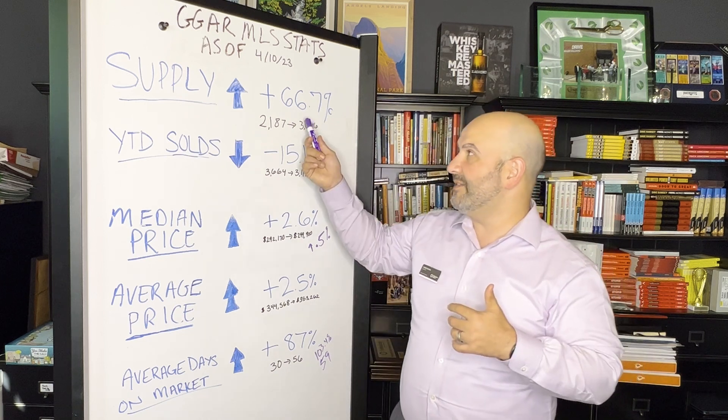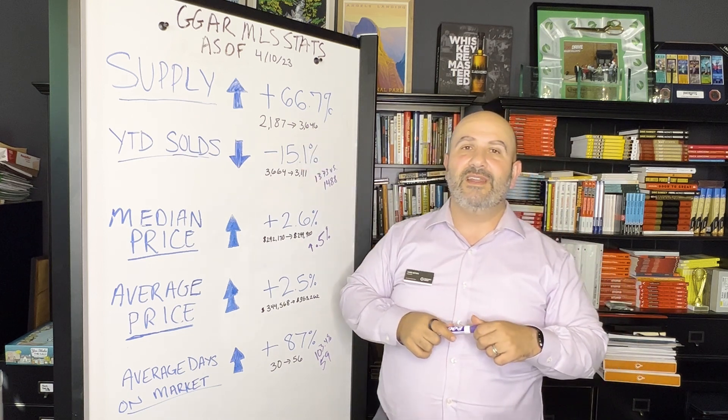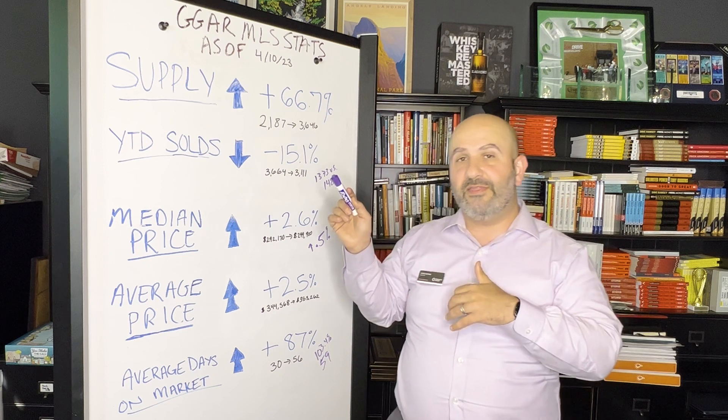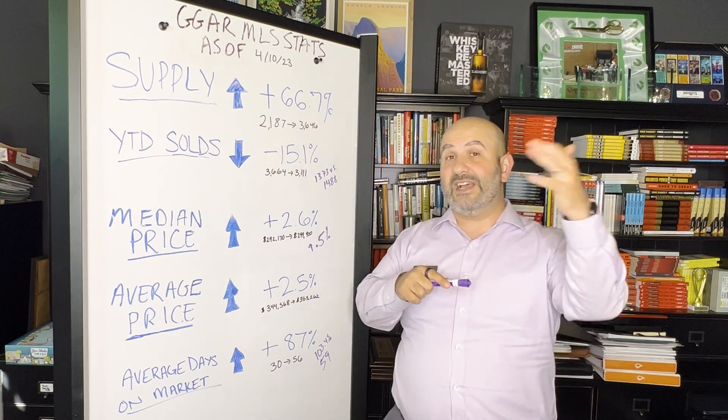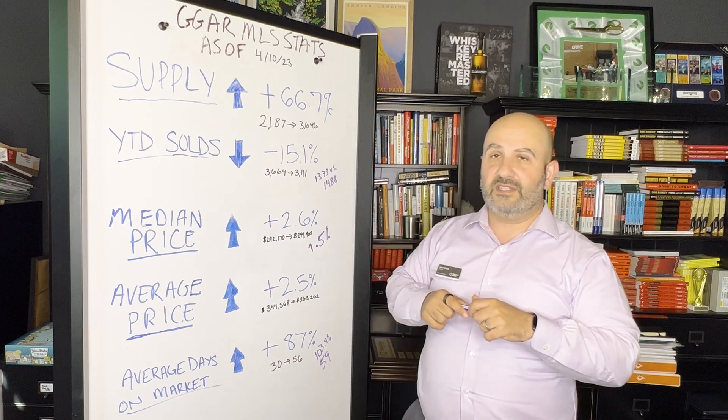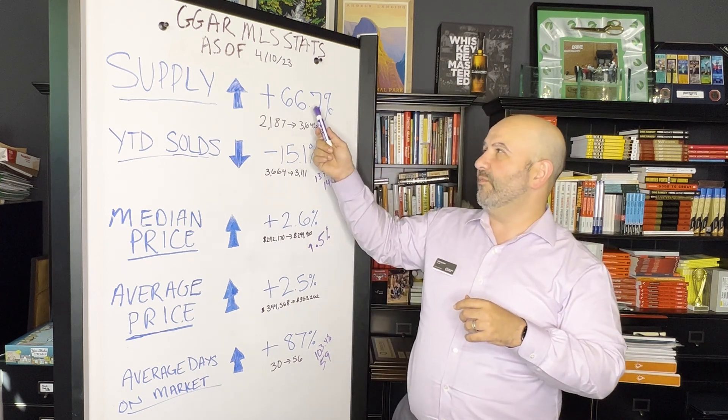Number one: supply is up 66.7% as of April 10th over last year. So 2,187 listings on the market last year, April 10th this year 3,646. Now we've seen this number be 60 to 70 percent for the last three months, so not a lot of change here.